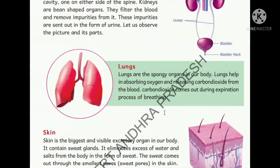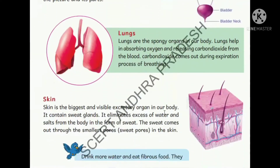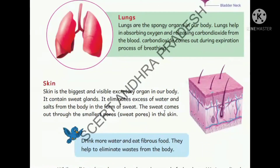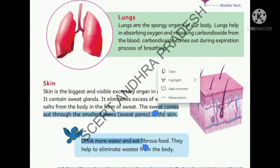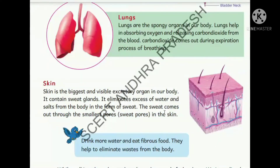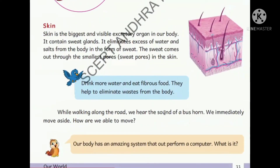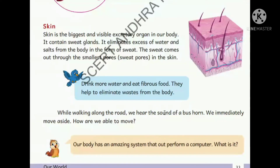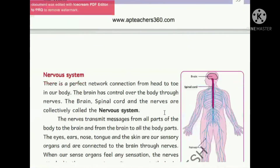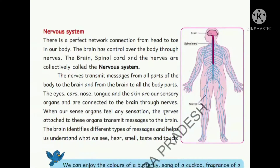The lungs are respiratory organs but also excretory organs because they release carbon dioxide, which is a waste material. The skin also releases sweat - excess water and salts - from the body, making skin an excretory organ too.